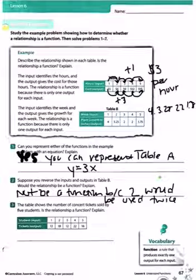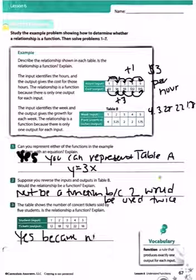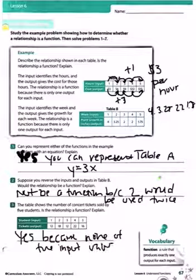Number three, the table shows the number of concert tickets sold by five students. Is the relationship a function? Explain. Yes, because none of the input values repeat.